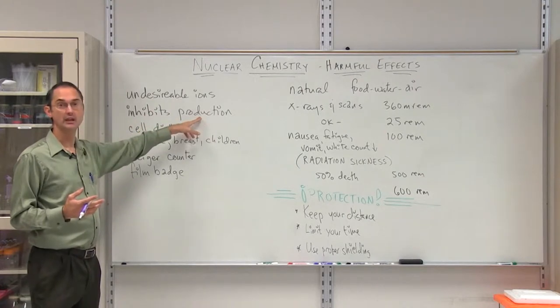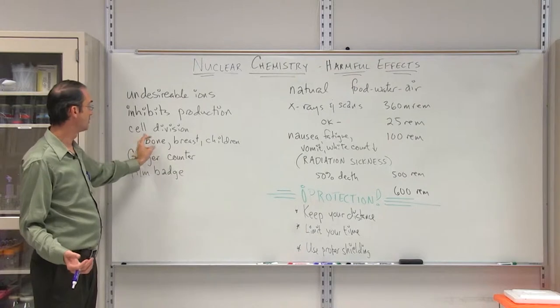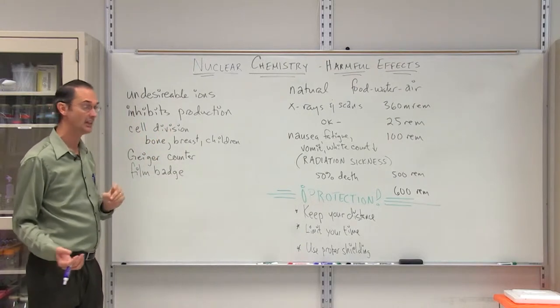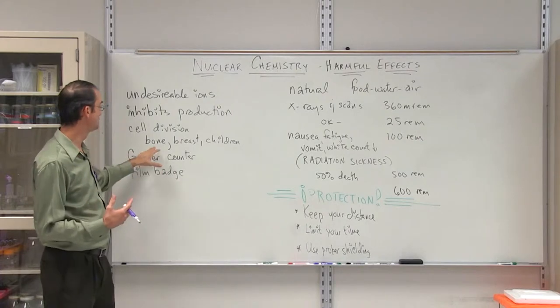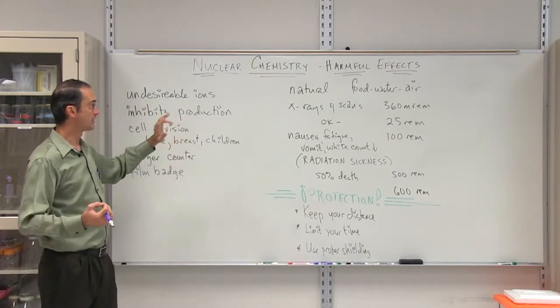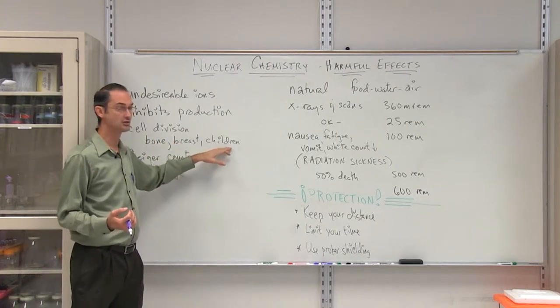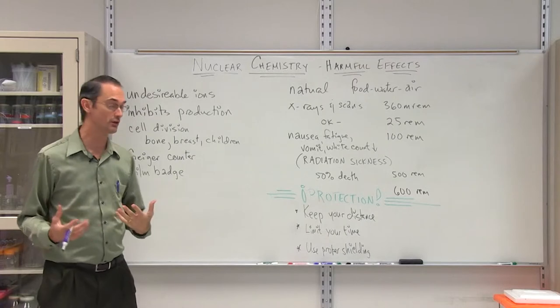It'll inhibit production of certain enzymes and things inside of the body that should be being produced, but also cell division is inhibited, specifically with certain types of structures inside the body such as bone and breast tissue, which are very significant sources of difficulties with radiation. As a result, children are very highly impacted, obviously with all of the growth that occurs with them.